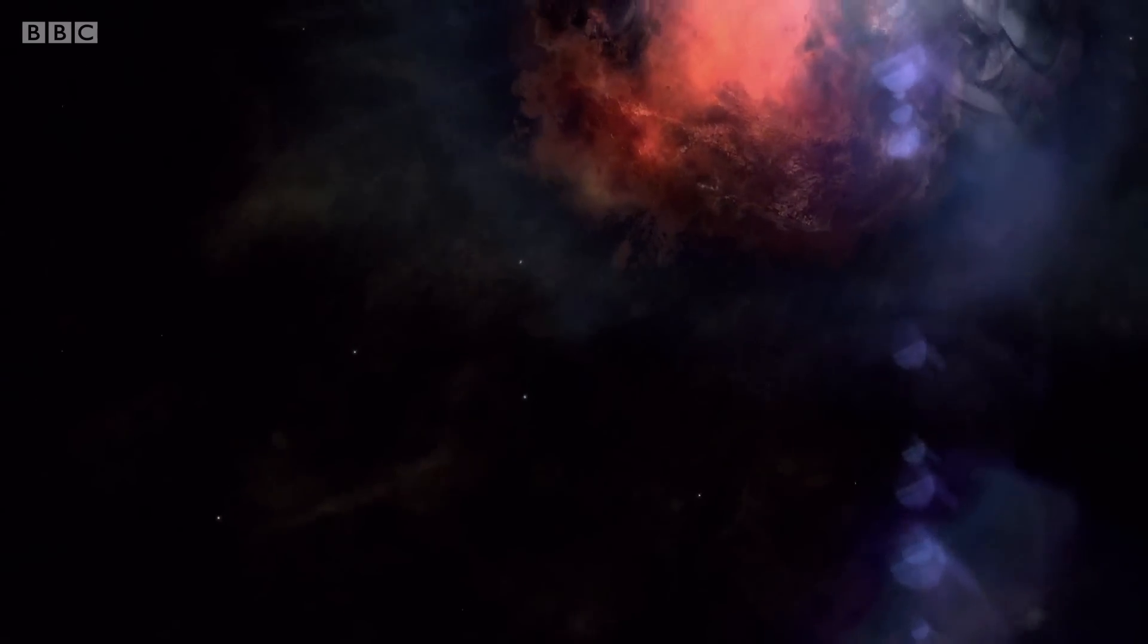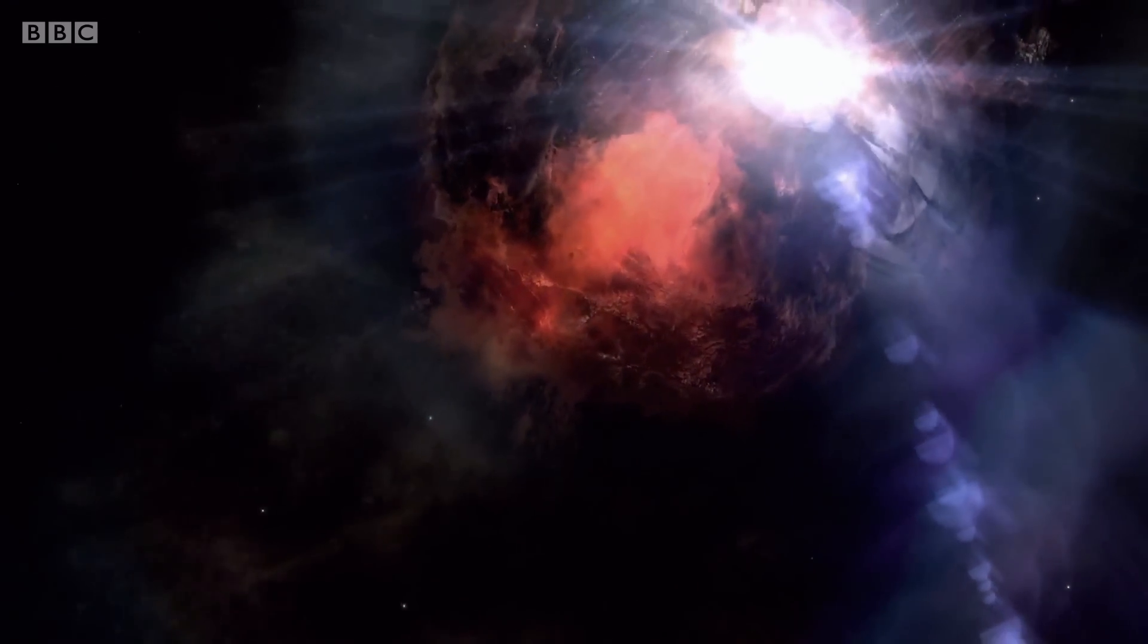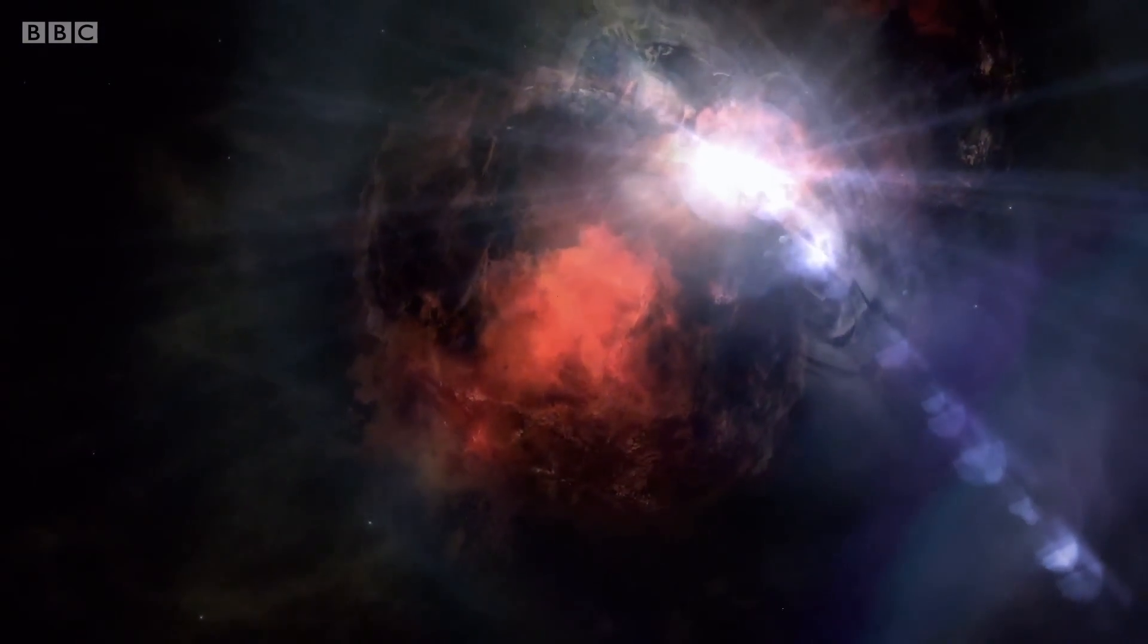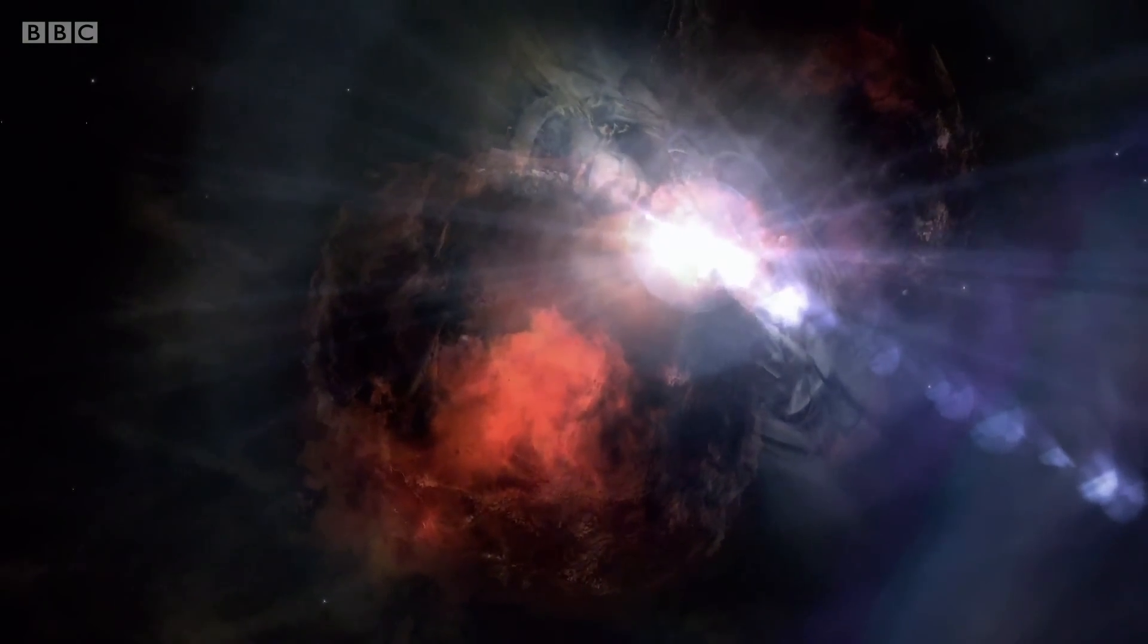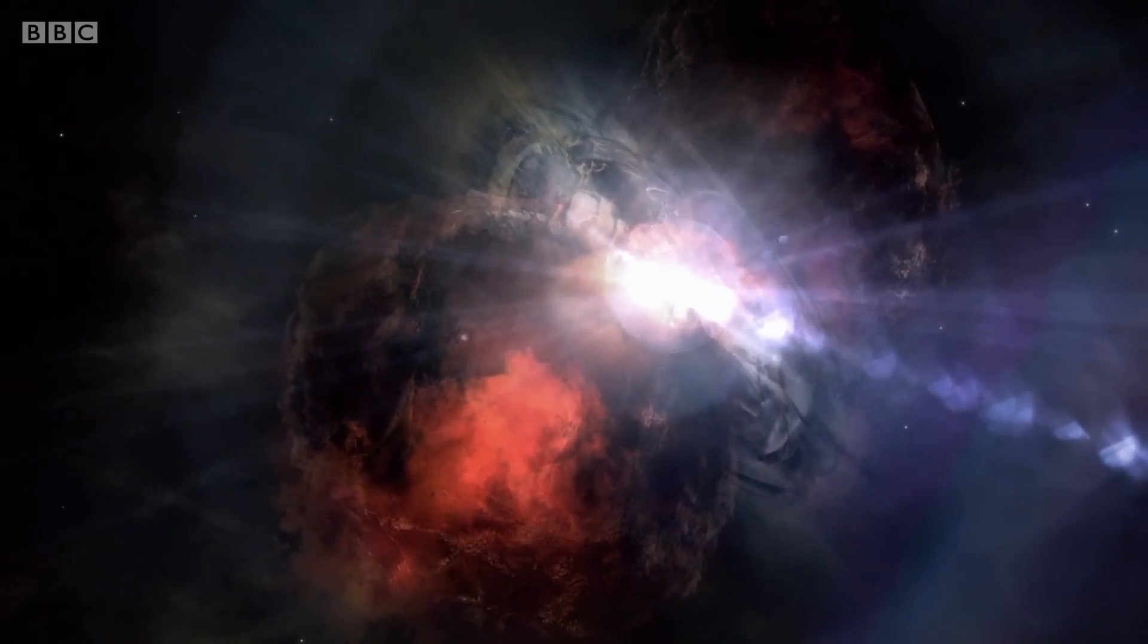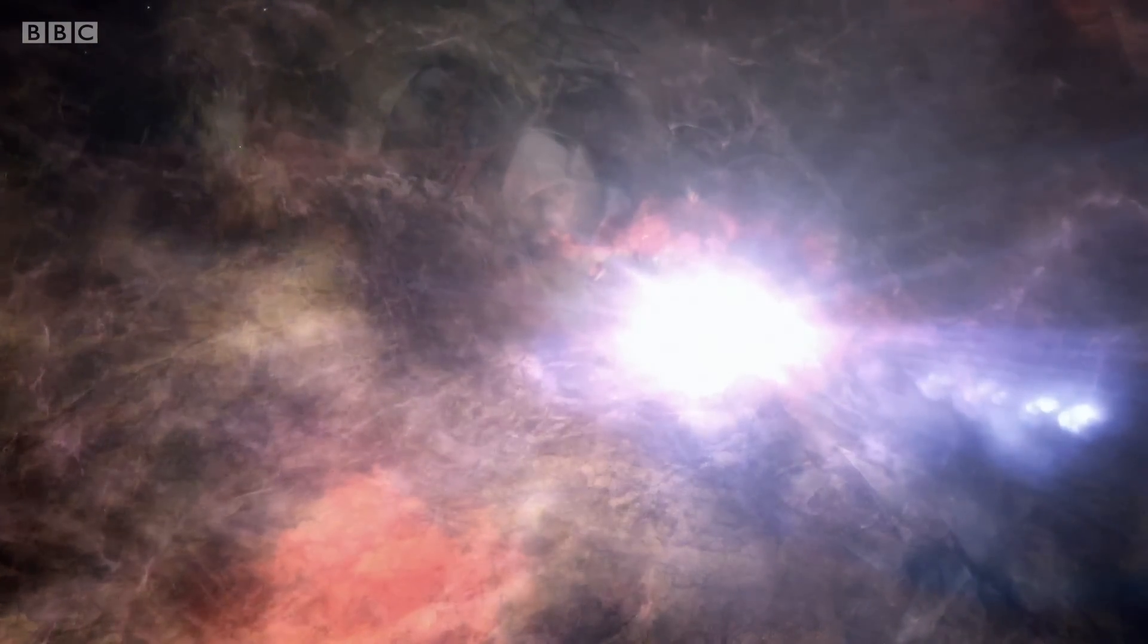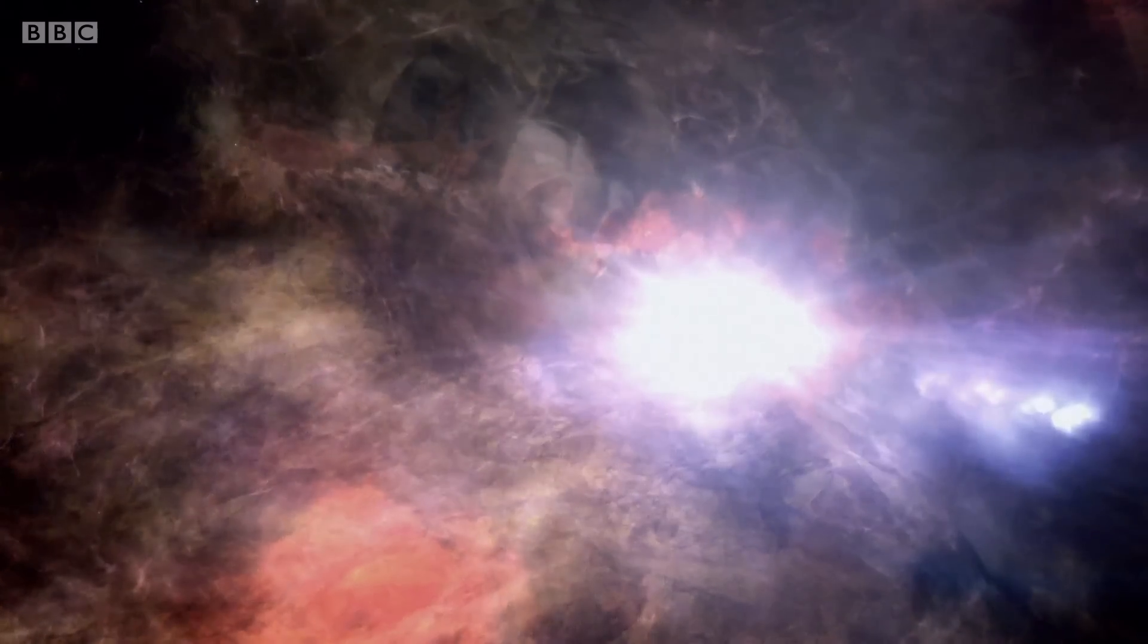75,000 million million kilometers away. This is Eta Carinae. This monster star is over 100 times more massive than our sun and burns about four million times brighter, making it one of the most luminous stars in the Milky Way.